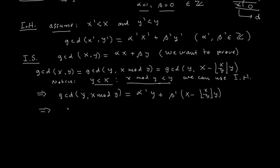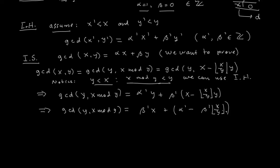So GCD(y, x mod y) equals alpha prime * y plus beta prime * (x minus floor(x/y) * y). Factoring x and y: this equals beta prime * x plus (alpha prime minus beta prime * floor(x/y)) * y. Since beta prime, alpha prime, and floor(x/y) are all integers, by closure properties this simplifies to alpha*x plus beta*y.